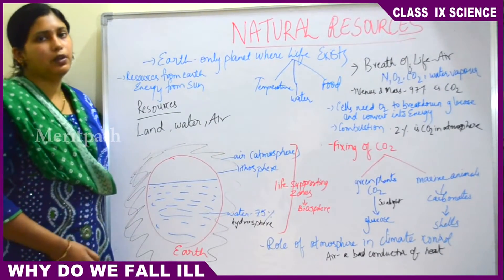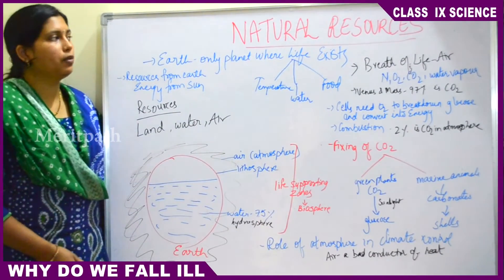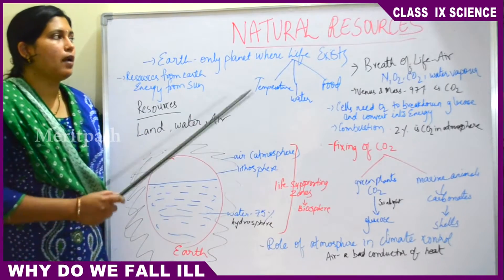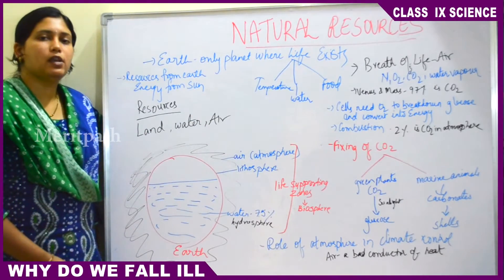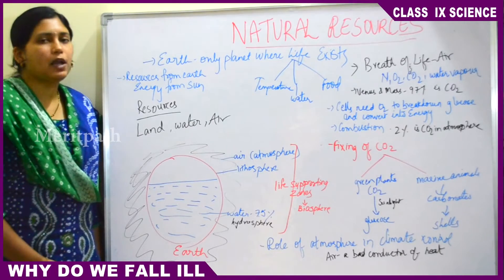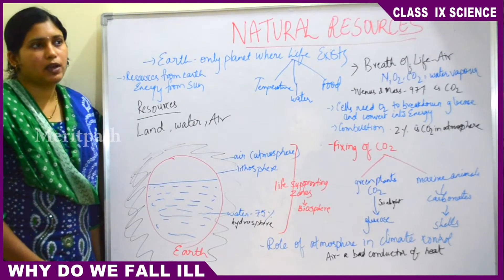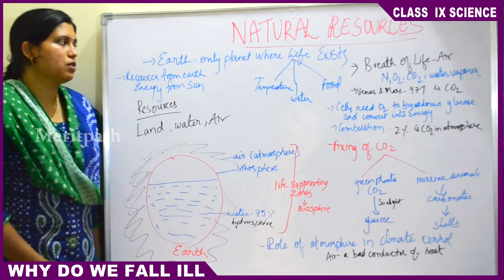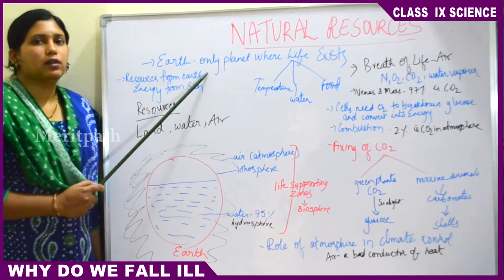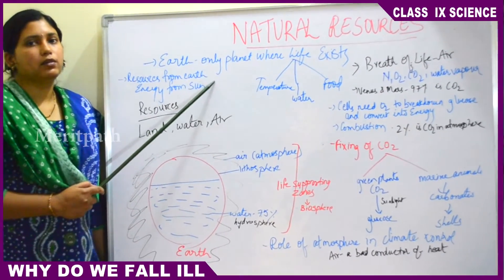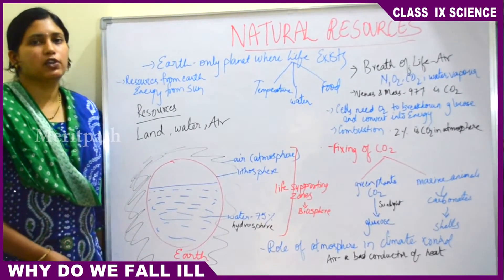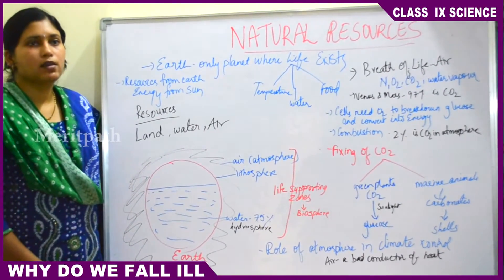Today we are going to deal with a chapter called natural resources. Natural resources are those which are freely available to us from the atmosphere. Sometimes they may be exhaustible due to human activity, and sometimes they may be inexhaustible. We live on Earth — our mother Earth — which is the only planet where life exists, and this feature makes us significant and distinct from other planets.